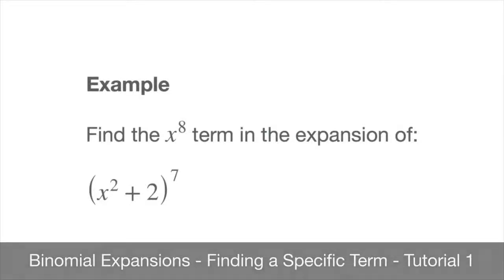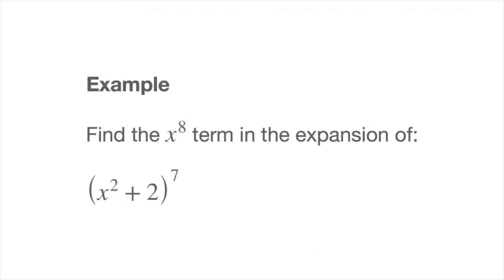In this tutorial, we learn how to find a specific term in a binomial expansion without actually having to write all the terms of the expansion. We're going to do this with an example. We're asked to find the x to the power of 8 term in the expansion of x squared plus 2, all of which is raised to the power of 7.